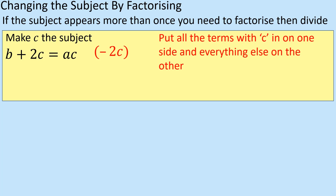Think about rearranging the formula — I always do the inverse. So if it's a plus 2C on the left, then I need to take it away on the right. Hopefully you can see that the 2C, which was originally here, has now moved over here and has become a minus. So I've got AC minus 2C.